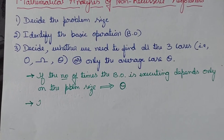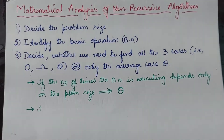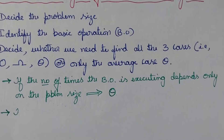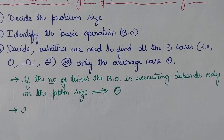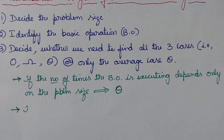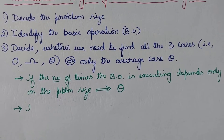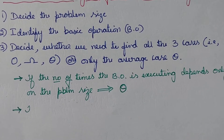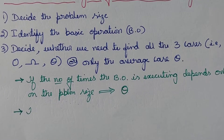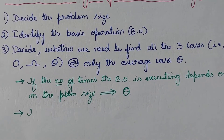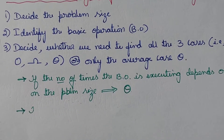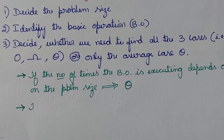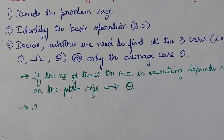If the number of times the basic operation executes depends only on the problem size, then we need to find only the average case Big Theta. Whatever the problem size, if the number of times the basic operation executes depends only on how many inputs we give, then we find only Big Theta.